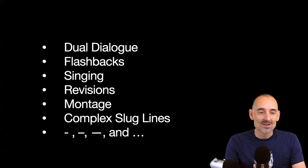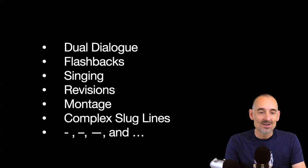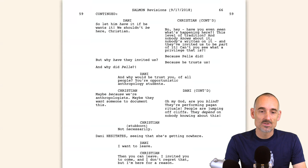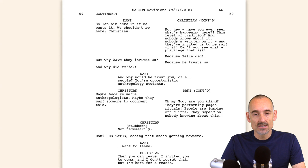Let's go back to our slideshow. I have a few special cases for you: dual dialogue, flashbacks, singing in films, revisions, montage, complex slug lines, and then the signs at the bottom — a hyphen, an en-dash, an em-dash, and an ellipsis. This is from the script for Midsommar — an Ari Aster folk horror film that was quite successful.